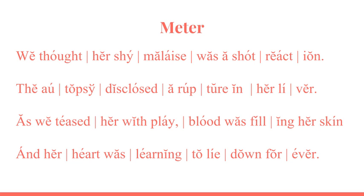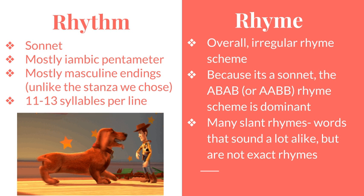Here you can see we have scanned the poem and marked the syllables as stressed or unstressed. For rhythm, the entire poem can be classified as a sonnet, with an added first stanza that is free verse. Singling out our stanza, we found that it is mostly iambic pentameter, with the third line being anapestic. The poem has mostly masculine endings — endings that end on a stressed syllable.